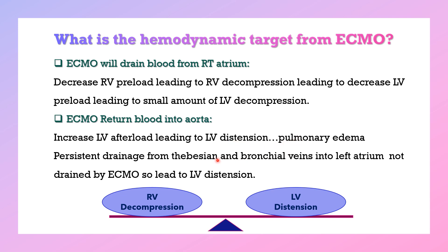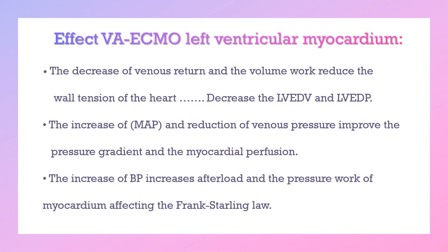Persistent drainage of Thebesian veins and bronchial veins into the left atrium is not drained by ECMO, so LV distension will occur. VA ECMO decreases venous return and volume work, reducing wall tension of the heart. This will decrease left ventricular end-diastolic volume and pressure. Increasing MAP and reduction of venous pressure will improve the pressure gradient and myocardial perfusion.